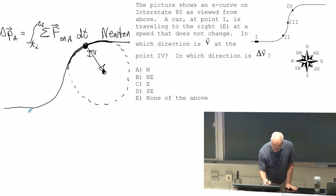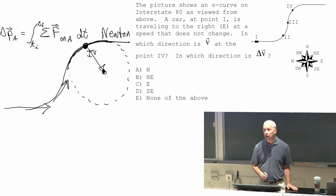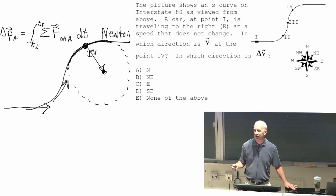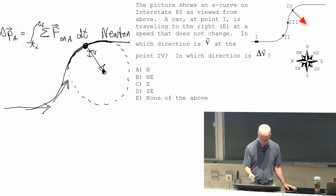Because that velocity vector and that one are not the same at all. So when something changes its direction, its velocity vector is changing. Any questions about that one? Four should have been southeast.